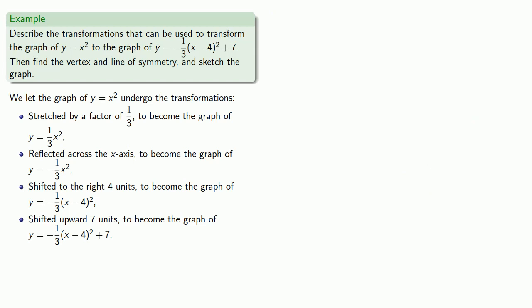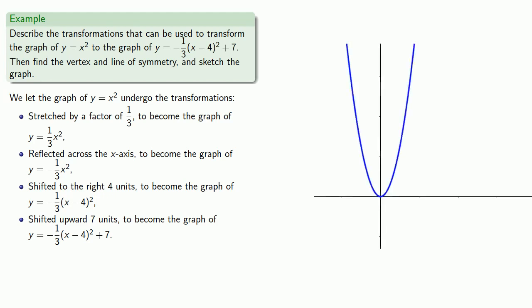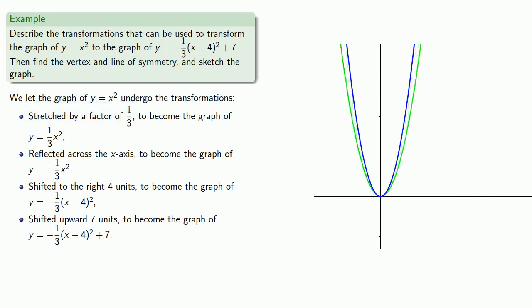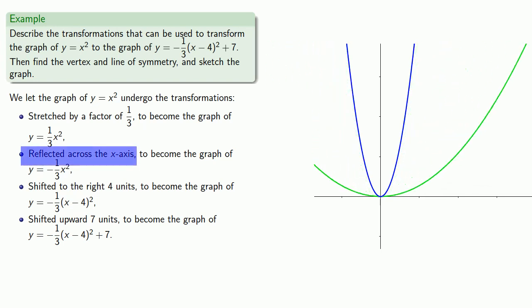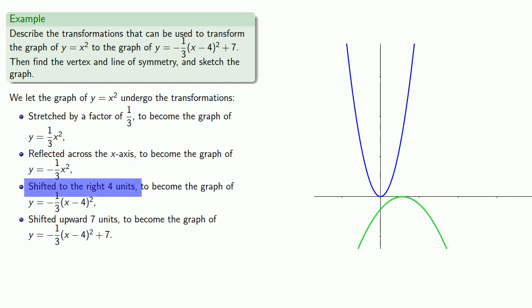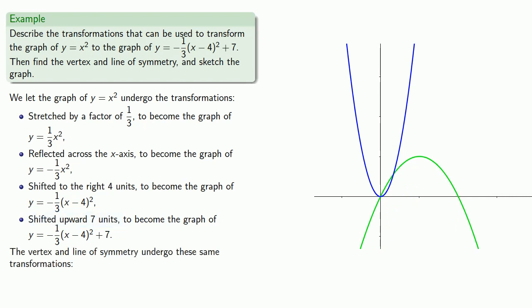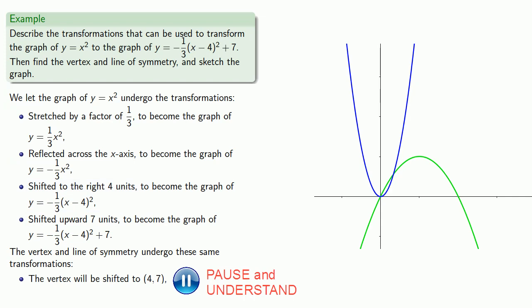Now we've written down all of our transformations, so we can take the graph of y equals x squared and apply them in order: stretch by a factor of one-third, reflect across the x-axis, shift to the right by 4 units, then shift upward by 7 units. The vertex undergoes the horizontal and vertical shifts, moving to the point (4, 7). The line of symmetry is only affected by the horizontal translation, so it moves to x equals 4.